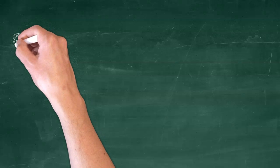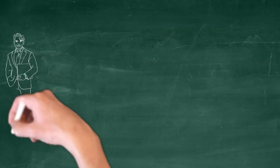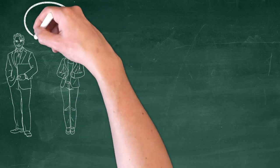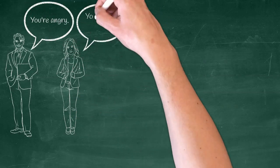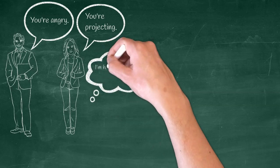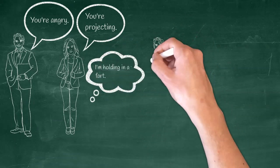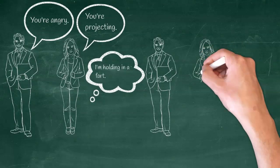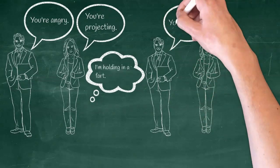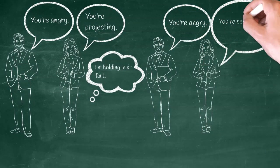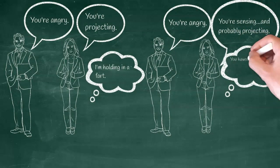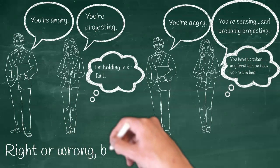Because the definition of projection is about the displacement of emotion, it's technically possible to say to someone that they're angry, be right, and not have any anger going on inside of ourselves. This would be called sensing. Both functions are still using the keen eyes of the super ego. And so, right or wrong, both are using the same mechanism. And they're probably projecting.